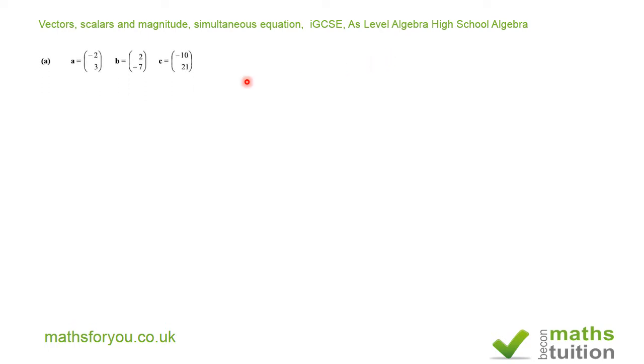Here we go. The first section says A is equal to column vector (-2, 3), B is (2, -7), and C is (-10, 21). Now, this is the first half of the whole question there.